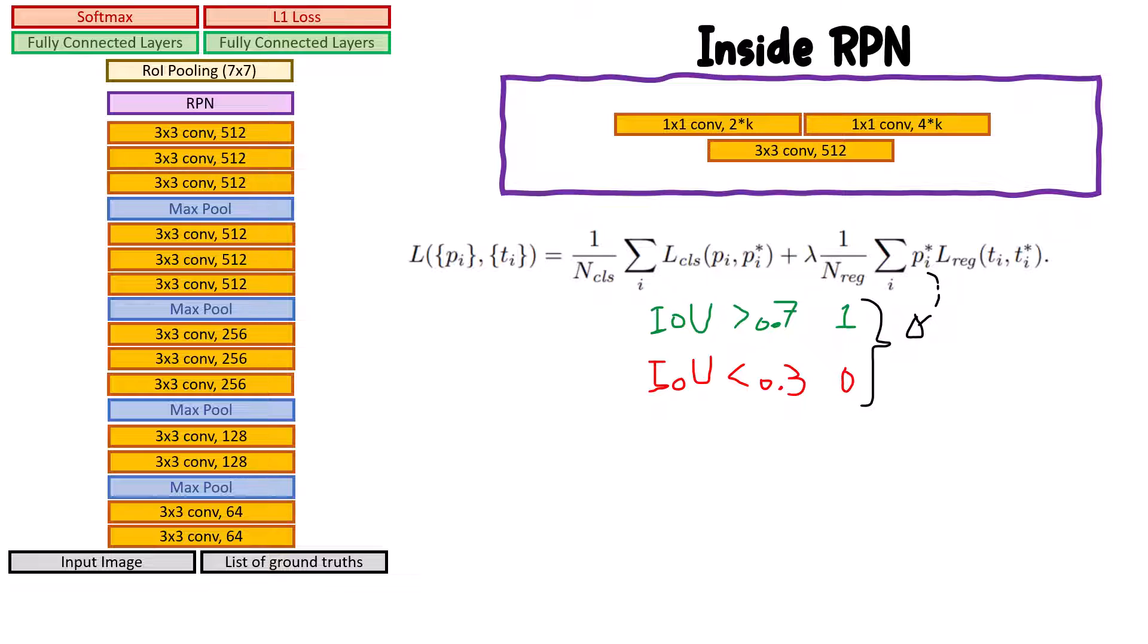To solve this problem, the authors propose to have an OR statement here and say in such cases we consider the anchors with highest IoU as our true positives. But how many anchors does our model produce? Assuming our model before RPN produces a feature map with spatial size 60 by 40...